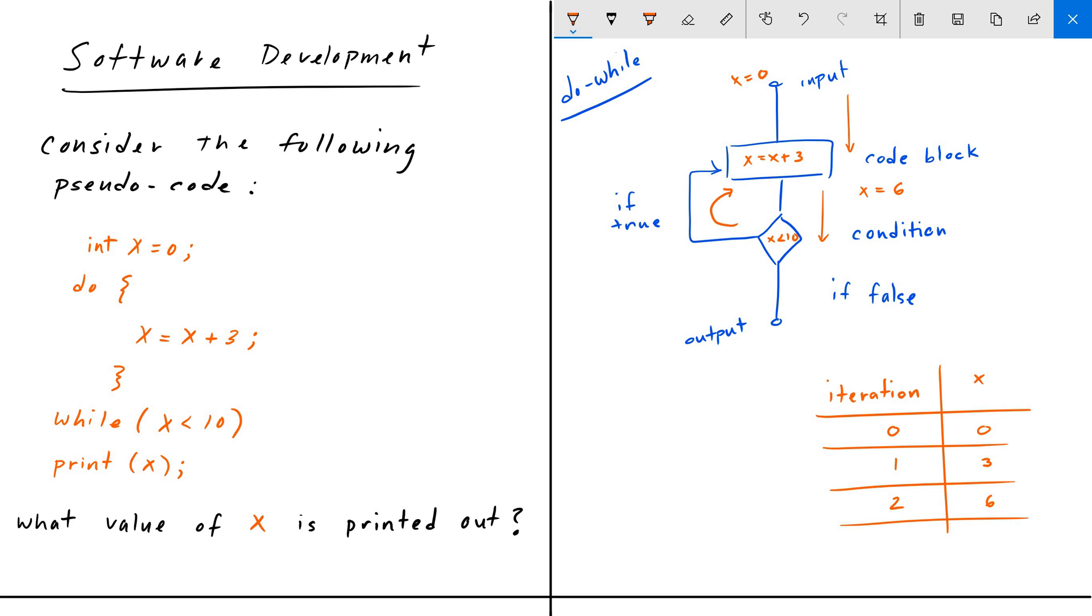Hitting the code block once again, we have the old X value of six. And now we reassign it as six plus three. X is now equal to nine. So on the third iteration, we have X is equal to nine.